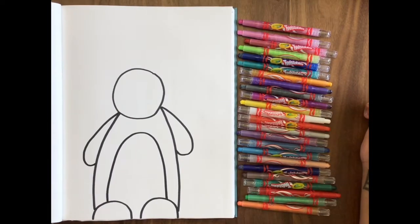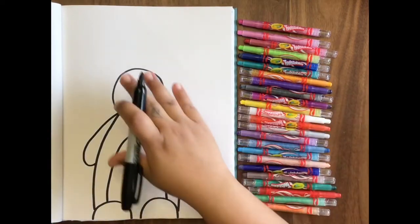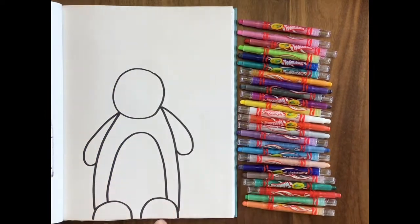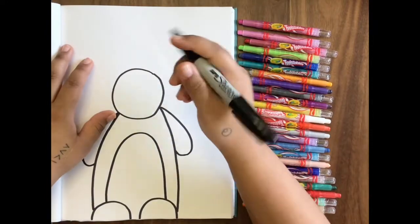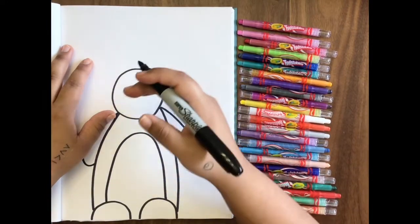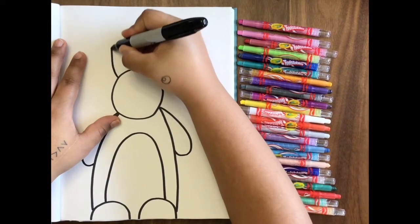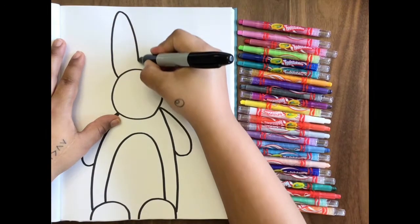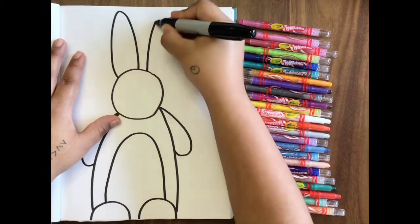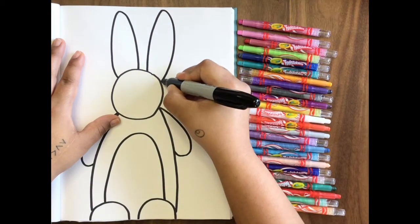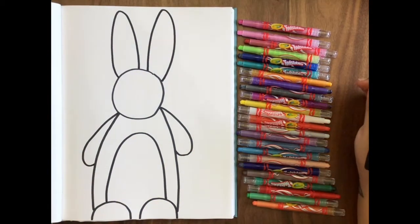Now again, if any of this is a little tricky for you, you can always pause me, rewind me, and try again. The next thing we're going to do is we're going to make our bunny ears. So we're going to go from our feet all the way up. So bunnies have really long ears. So what we're going to do is we're going to make one bunny ear going all the way to the tippy top, and another bunny ear going all the way to the tippy top. Look at those ears.